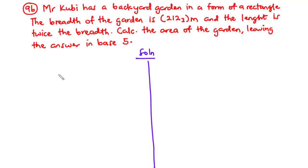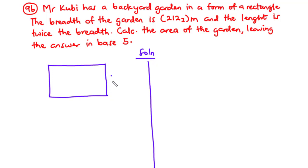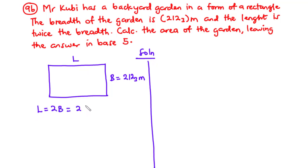From the question, we have been told that the backyard garden is in the form of a rectangle. If we draw this rectangle, one side is the breadth and the other is the length. The breadth is given as 212 base 3 meters, and the length equals 2 times the breadth, which is 2 times 212 base 3 meters.